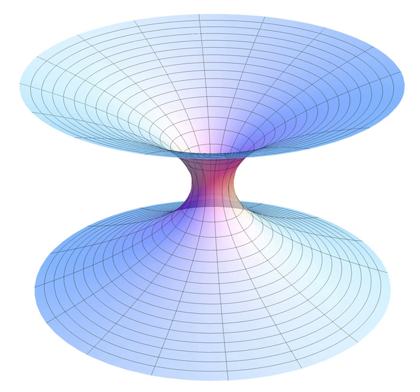A physical theory involves one or more relationships between various measurable quantities. Archimedes realized that a ship floats by displacing its mass of water. Pythagoras understood the relation between the length of a vibrating string and the musical tone it produces.